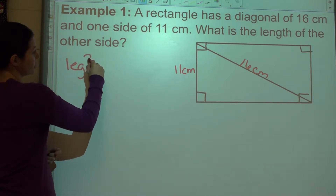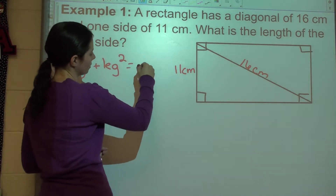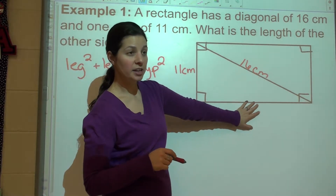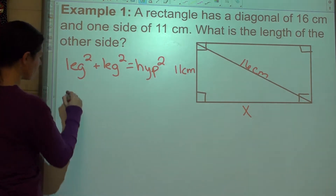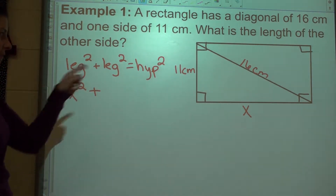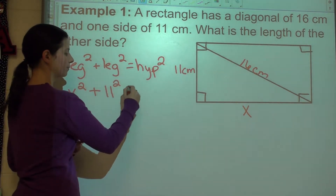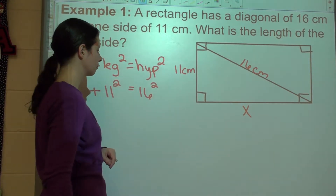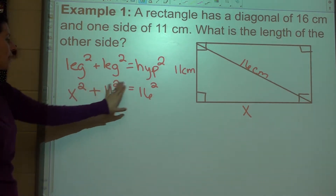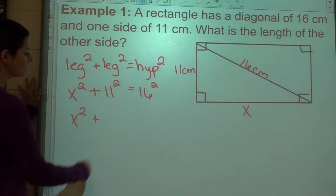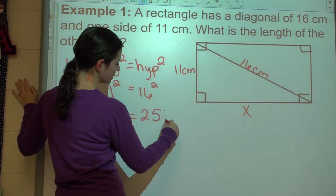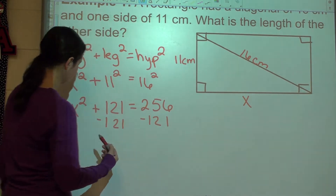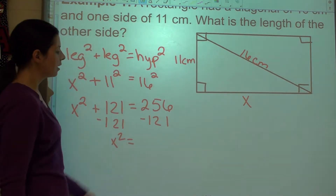I'm going to use leg squared plus leg squared, but you can absolutely use A squared plus B squared. My missing leg is X. So I've got X squared for my missing leg, plus 11 squared for my other leg, equals 16 squared for my hypotenuse. Now I need to square everything: X squared stays X squared, 11 squared is 121, and 16 squared is 256. I'm going to subtract 121 from both sides, leaving me with X squared equals 135.